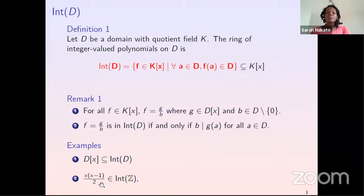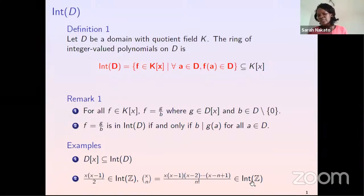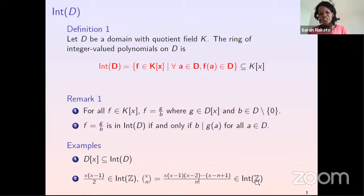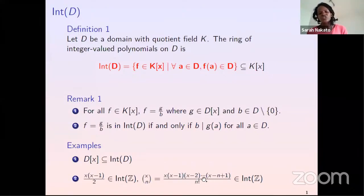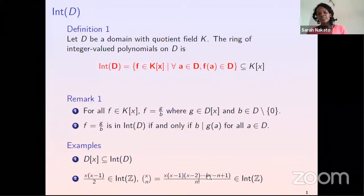This belongs to a special type of polynomials known as binomial polynomials. For each n, X choose n is in Int(D). More generally, number theory results give us elements of Int(D) — for example, a product of n consecutive integers is divisible by n factorial. These binomial polynomials are very special because every element of Int(D) can be written as a Z-linear combination of them. In other words, the binomial polynomials form a Z-basis of Int(D).